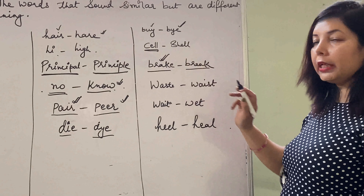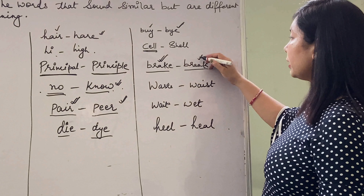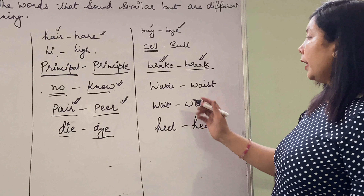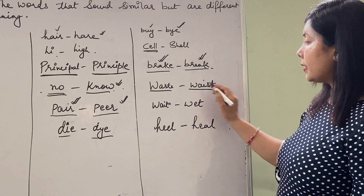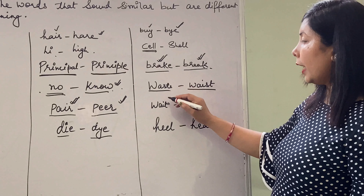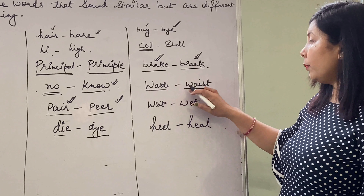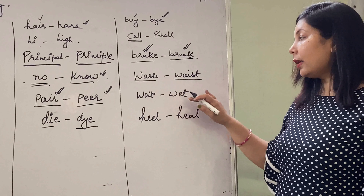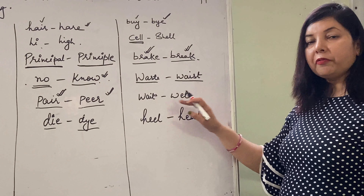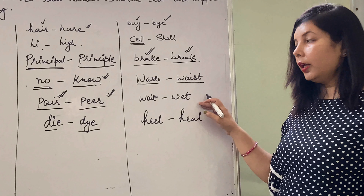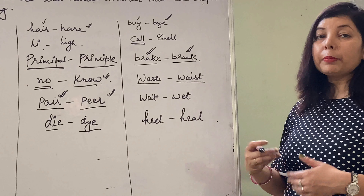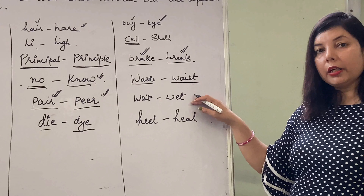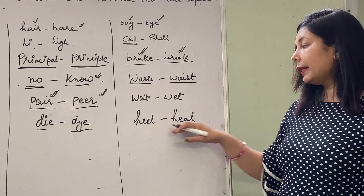Now 'brake' and 'break'. Ye 'brake' hum cycle mein dekhte hain. Or ye 'break' ka matlab ki aap kisi cheez ke beech mein interval lete hain. Then 'waste' and 'waist'. Is 'waste' ka matlab kisi cheez ko barbaad karna. Or W-A-I-S-T 'waist' ka matlab kamar (waist of the body). 'Wait' and 'weight'. 'Wait' ka matlab kisi ke liye intezaar karna. Or 'weight' ka matlab kya hai? Bhaar hona (weight/heaviness).